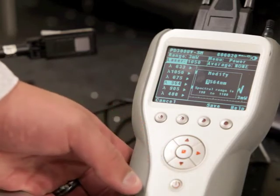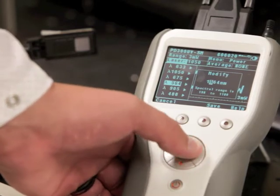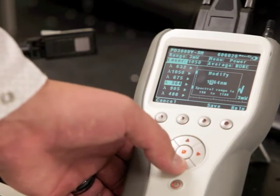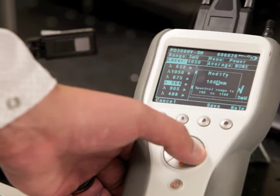Now, let's say I wanted to enter 1064 nanometers. To do that, just go through here and arrow through to the desired numbers, 1064.